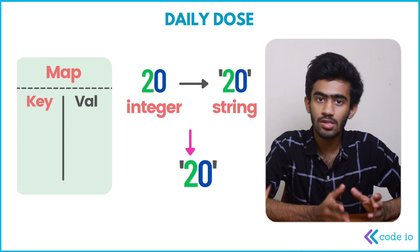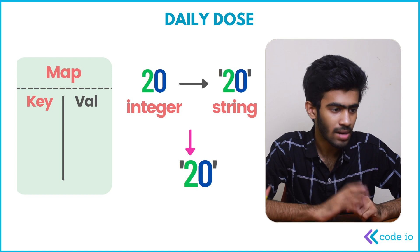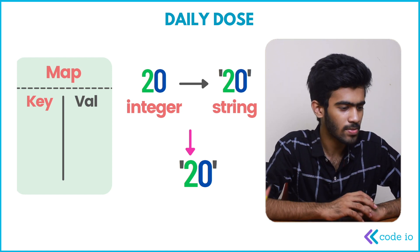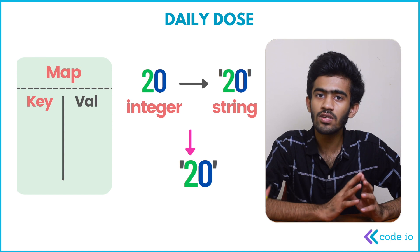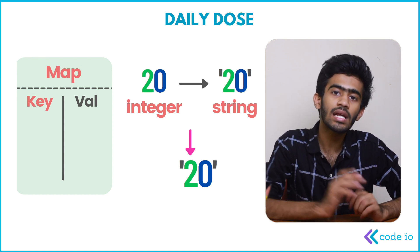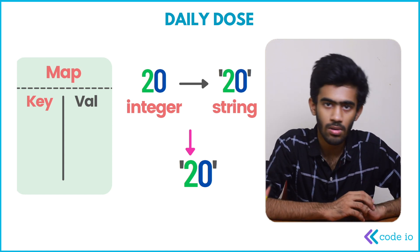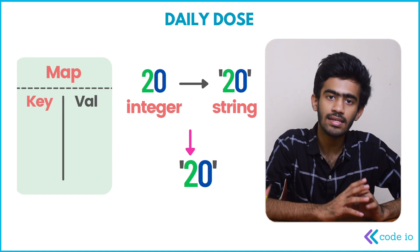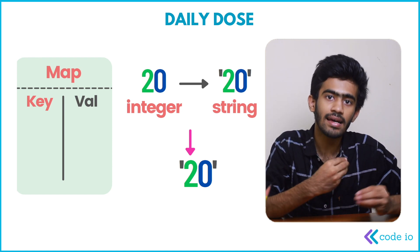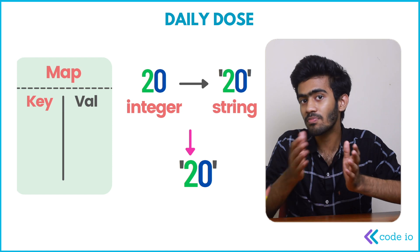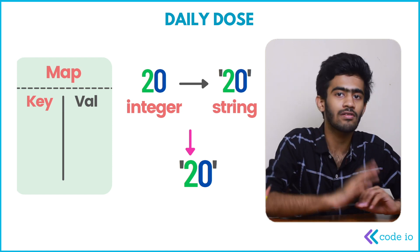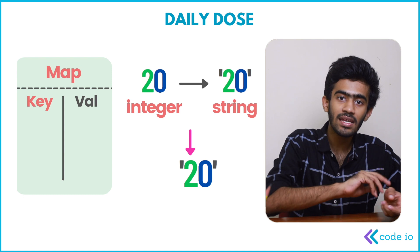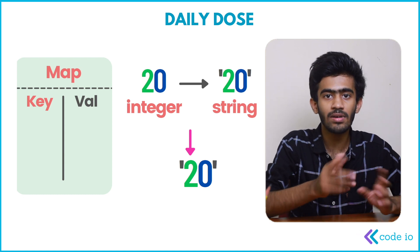Now we have the number 20 as a string. We can traverse that string. We can use a for loop. If we traverse this, we can store a HashMap. If we get the HashMap, if we insert a unique character, we can insert into a HashMap. We can check and insert into the HashMap.